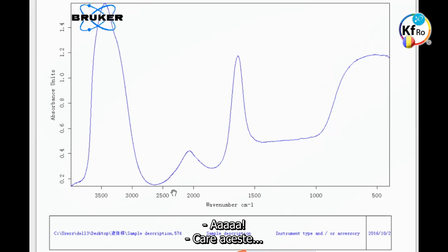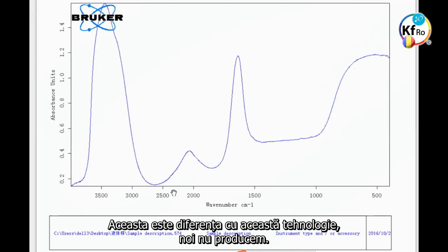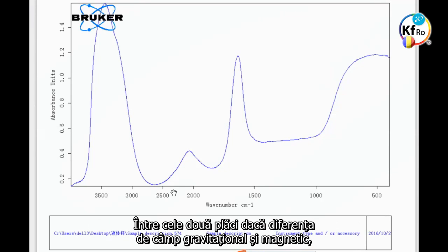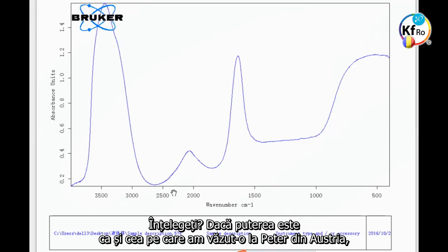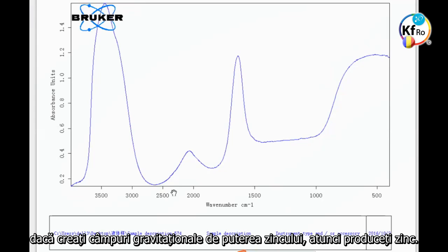This is the difference with the technology. We don't go to produce in between the two plates. If the difference in the gravitational magnetic field of the strength is the strength of the copper, then you attract copper. If the strength is, we've seen it with Peter's work in Austria, if you create the gravitational field of strength that is of zinc, you produce zinc.